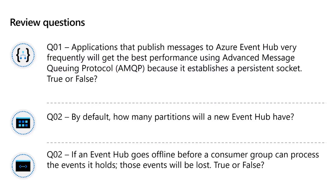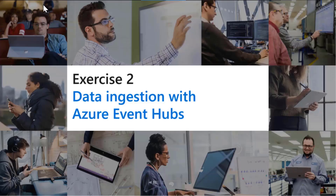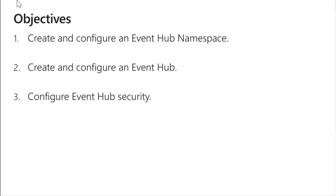A couple of key points: applications that publish messages to Event Hub very frequently will get the best performance by using the Advanced Message Queuing Protocol, because it establishes a persistent socket. By default, Event Hub has 2 partitions — you can verify this in the lab when you create it. If an Event Hub goes offline before a consumer can process an event, the data is not lost.